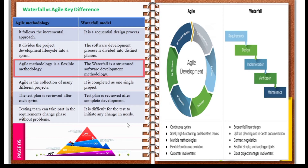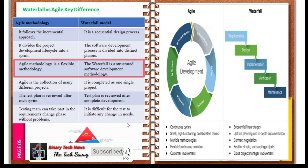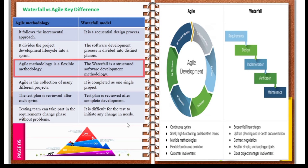Agile methodology is a flexible methodology — even if requirements change at any point, there is no problem. When development is ongoing, changes in requirements are feasible and new technology can be used. On the other hand, Waterfall methodology is a structured software development methodology.